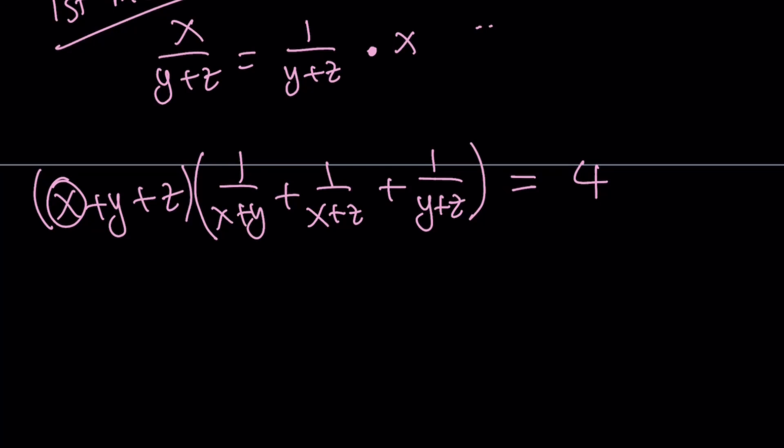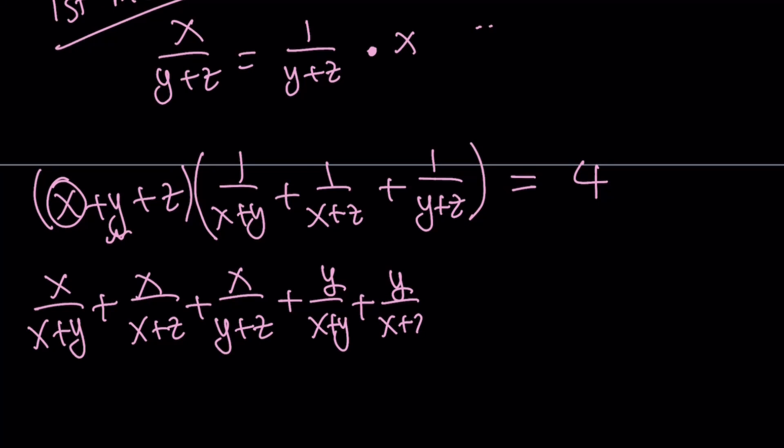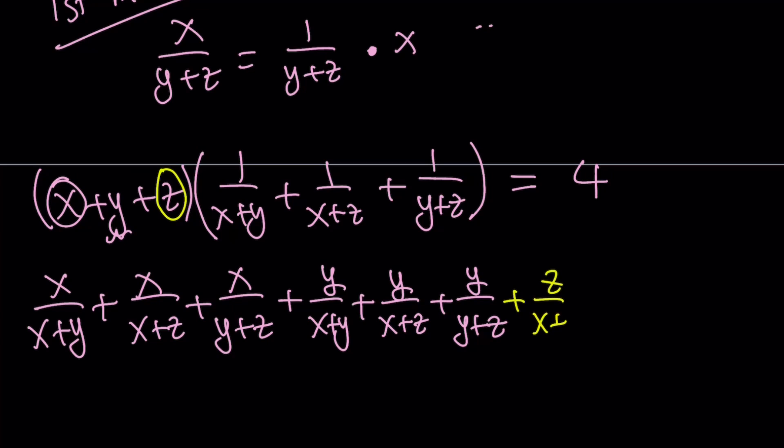Let's go ahead and distribute x first. So that's going to give us x over x plus y plus x over x plus z plus x over y plus z. And now we're going to distribute the y. y over x plus y plus y over x plus z plus y over y plus z. And then finally, we're going to distribute the z. z over x plus y plus z over x plus z and then z over y plus z. And the sum is equal to 4.